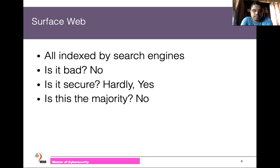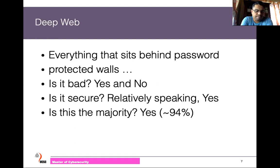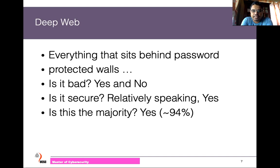The majority of the internet is actually the deep web — around 94%. The deep web refers to internet content behind access controls. If you log into your Google or Facebook account, the content you see after logging in is in the deep web. To access the deep web, you need to provide authorization, which makes it relatively more secure than the surface web.